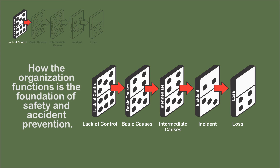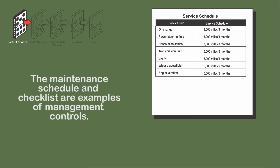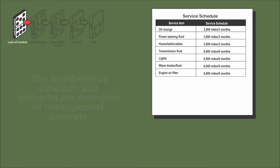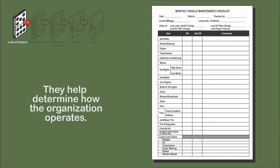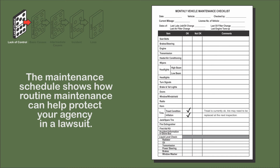They note correctly that the lack of control sets the stage for the other dominoes in their model. In the van incident, a van replacement schedule, a maintenance schedule, and a vehicle maintenance inspection checklist are management controls that reduce the likelihood of the basic and intermediate causes resulting in an incident or loss.